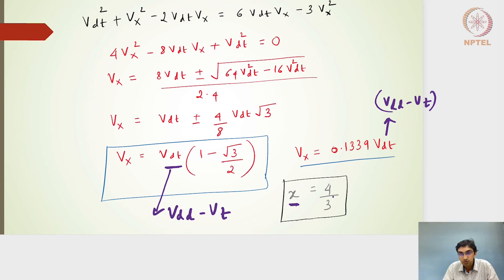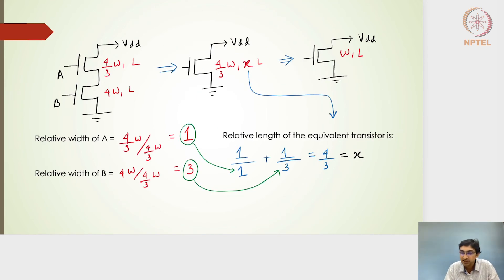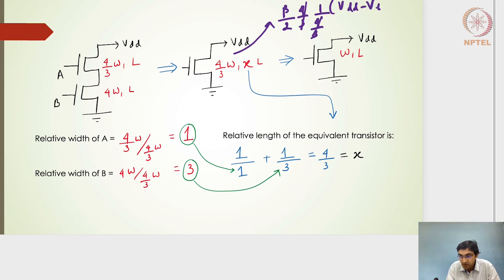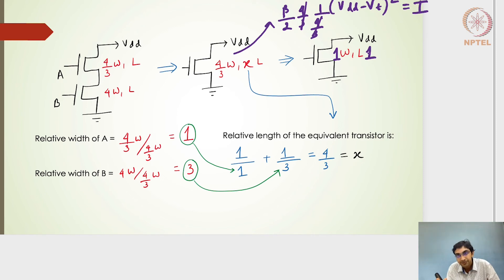Substituting Vx back, x turns out to be 4/3. So the equivalent transistor is 4/3 W with length (4/3)L. Rewriting the current equation for this transistor: (β/2) × (4/3)/(4/3) × (VDD − Vt)² — the 4/3 factors cancel, leaving (β/2) × (VDD − Vt)², which is identical to the current for a transistor of width W and length L. So the asymmetric series pair is equivalent to a unit transistor.